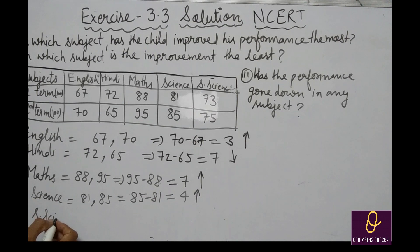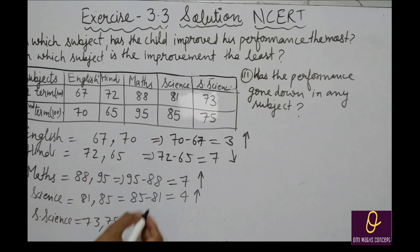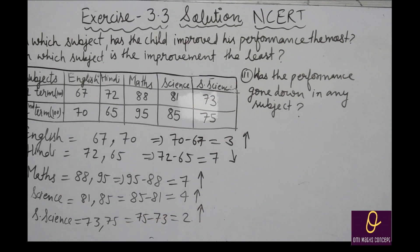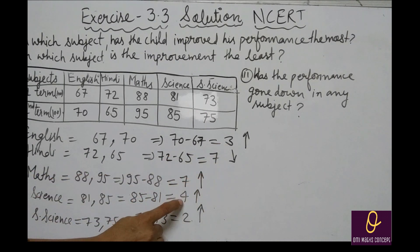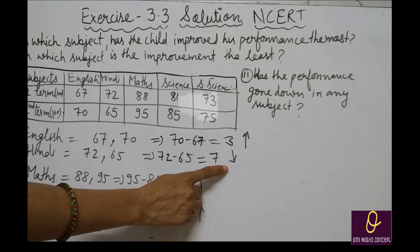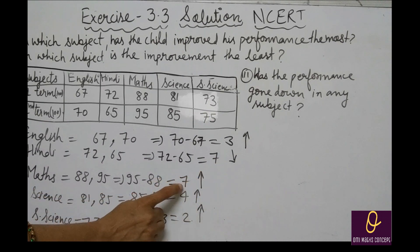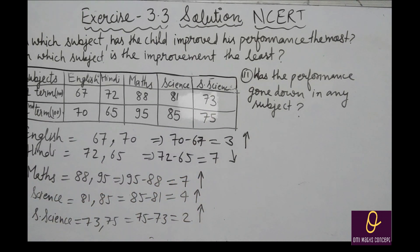Social science: first term 73, second term 75 — improvement, 75-73 = 2. अब question का answer: सबसे अच्छा improve किसमें किया? English +3, Maths +7, Science +4, Social Science +2 — Hindi decrease हुई. 7 सबसे जादा है — वो maths है. The child has improved the most in maths.